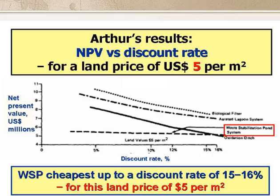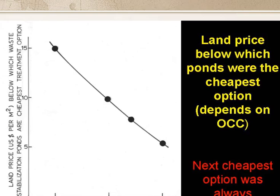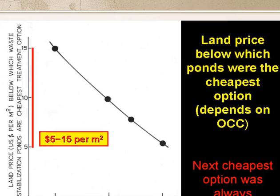He then allowed the discount rate to vary while keeping the land price constant at 5 dollars per square metre. His figure, reproduced in this slide, shows that ponds were cheapest up to a discount rate of somewhere between 15 and 16%; for higher rates, the oxidation ditch was cheapest. He then repeated this for land prices up to 15 dollars per square metre. The y-axis is the land price below which ponds were the cheapest option, and the x-axis is the discount rate — there's almost a linear relationship between these two parameters. This shows the range of land prices between 5 and 15 dollars per square metre below which, depending on the discount rates, ponds were the cheapest option. The next cheapest option was always oxidation ditches.